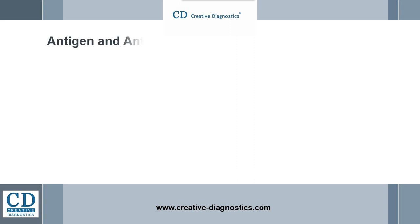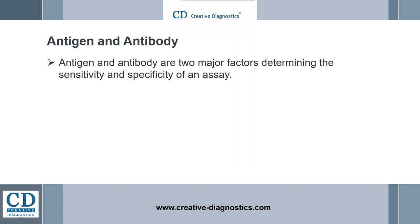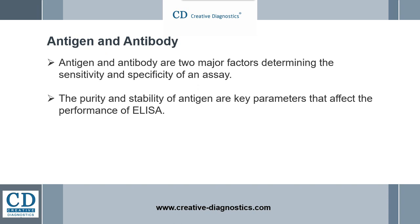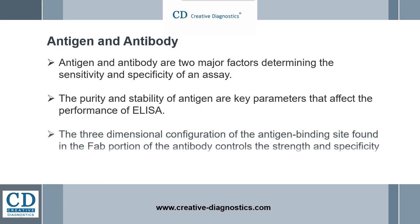Antigen and antibody are two major factors determining the sensitivity and specificity of an assay. The purity and stability of antigen are key parameters that affect the performance of the ELISA. High antigen purity can enhance the capability of capturing antibody, thereby increasing the sensitivity of the assay. The three-dimensional configuration of the antigen binding site, found in the Fab portion of the antibody, controls the strength and specificity of the interaction with antigen. The stronger the interaction, the lower the concentration of antigen that can be detected.